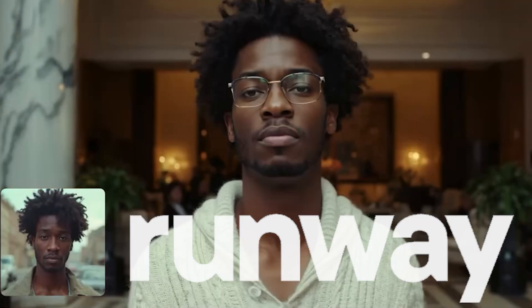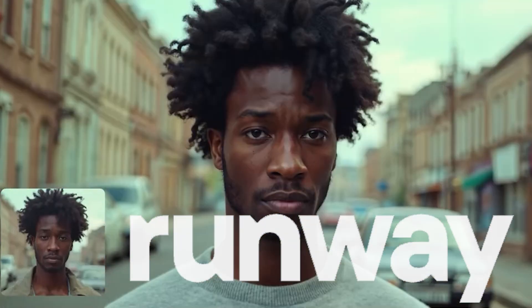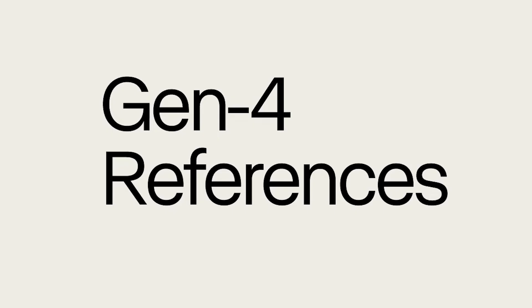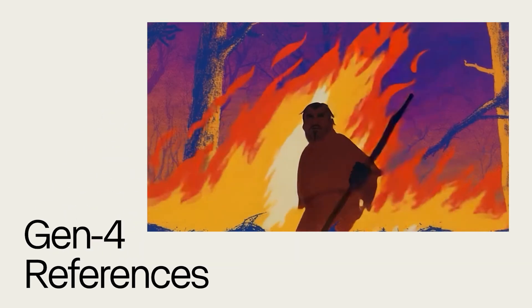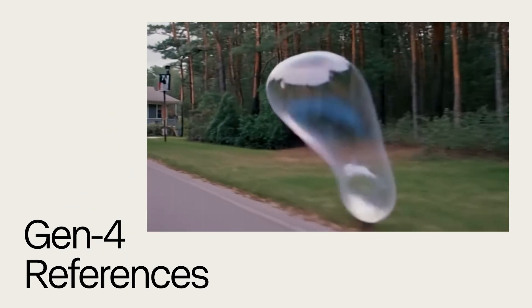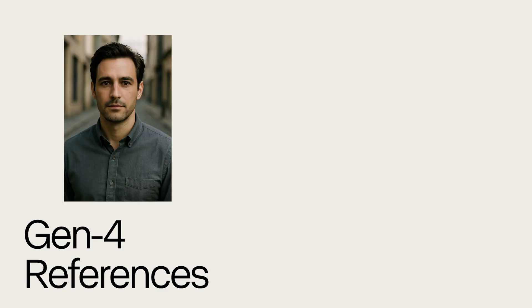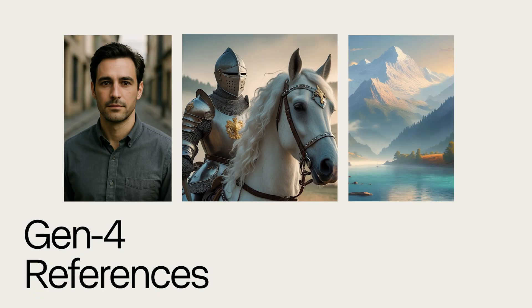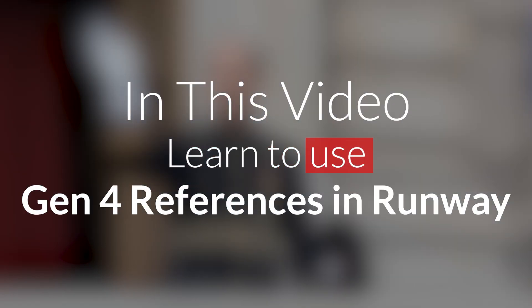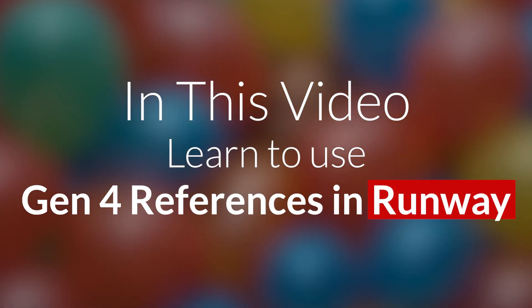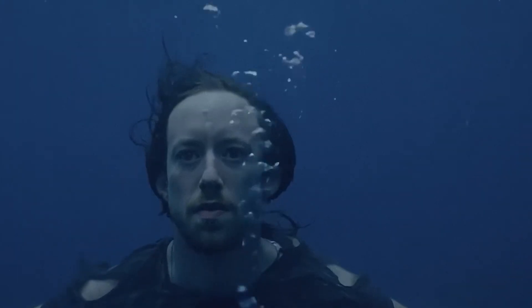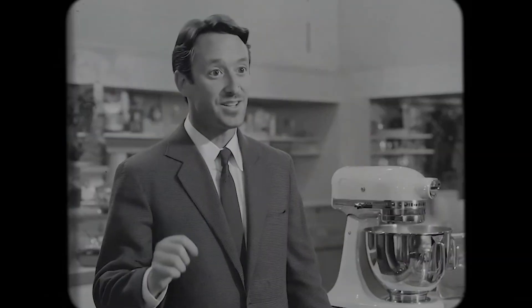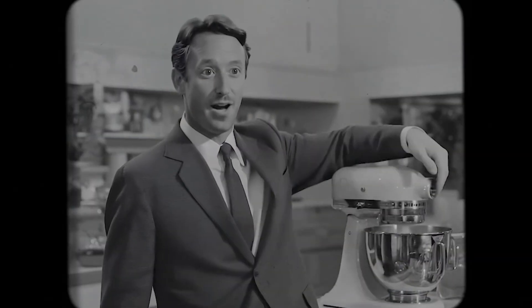Runway has recently released Gen4 References, which is a powerful tool for maintaining visual consistency in AI-generated images and videos. It allows creators to upload up to three reference images — such as characters, scenes, or styles — which the AI uses as visual anchors to generate cohesive cinematic outputs. In this video, you'll learn how to use Gen4 References in Runway to create, explore, and evolve your visuals like a pro — from combining references and adding text prompts to even creating videos. We'll walk you through it step by step.